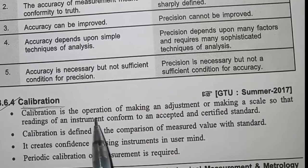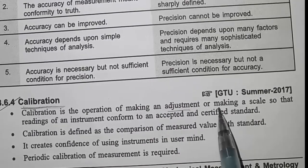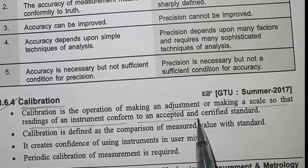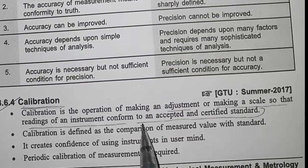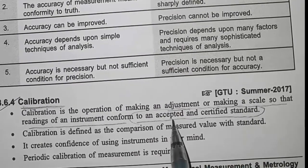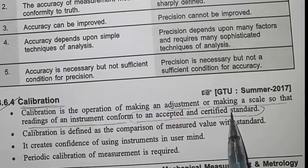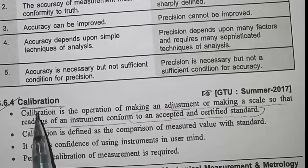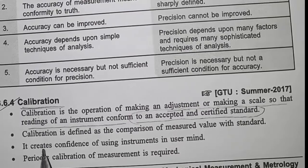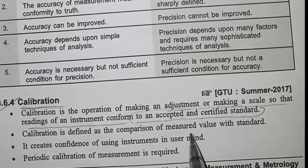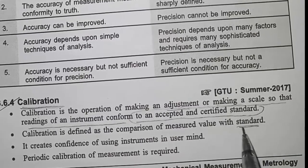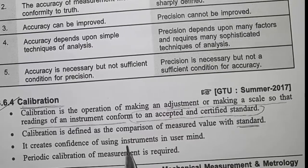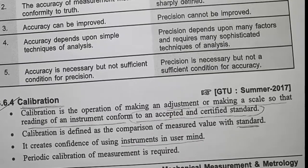So basically, calibration is the operation of making adjustments or making a scale so that the reading of the instrument confirms to an accepted and certified standard. This is very important — your reading should conform to a certified standard. That's why it is necessary to calibrate all measuring instruments. Calibration is defined as the comparison of a measured value with the standard.